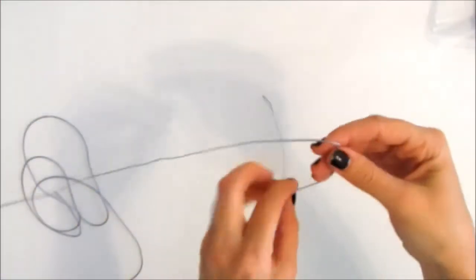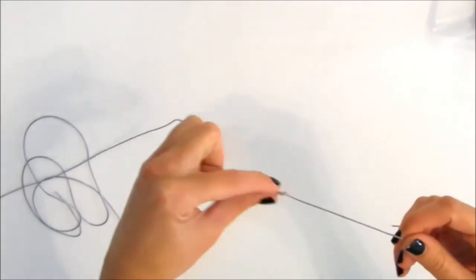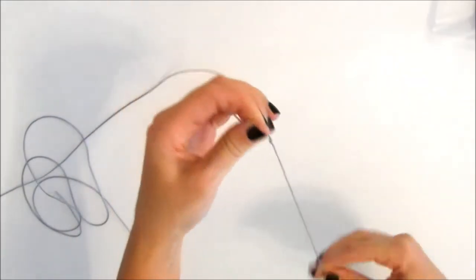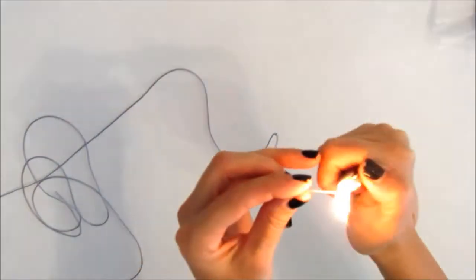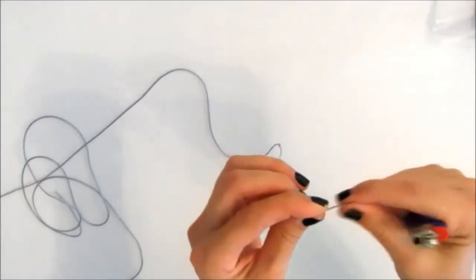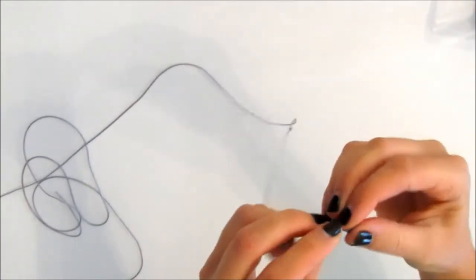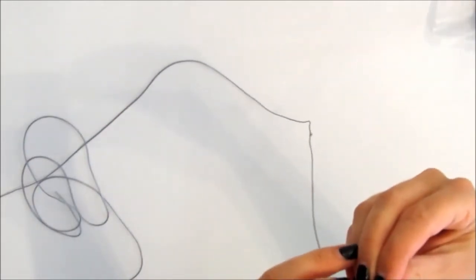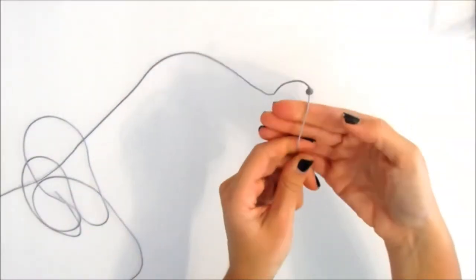We take the cord and we make a simple knot. We take the one end of the cord and we burn it a bit to make it easier for the beads to slide into the cord. We take our first bead and we put it inside the cord.